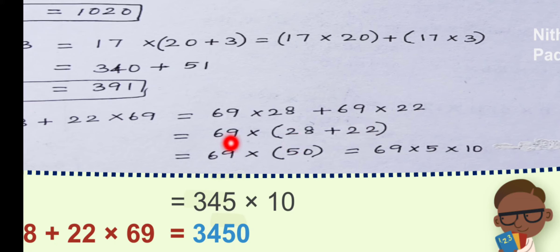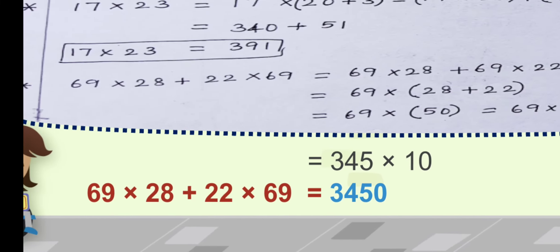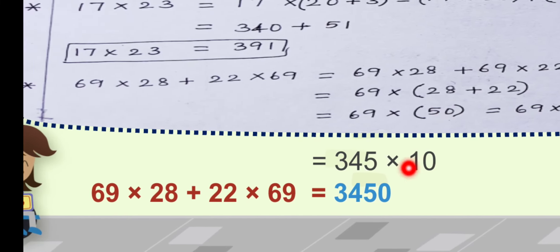Now, it has been written as 69 multiplied by 28 plus 22. See, 8 plus 2 is 10. 0 is written, 1 is carried over, it should be added with this 2. 1 plus 2 is 3. 3 plus 2 is 5. So, 28 plus 22 is equal to 50. 69 into 50. For 0 in 10's place, put 0 in 1's place. Now it is enough to multiply 69 with 5. You get 345.